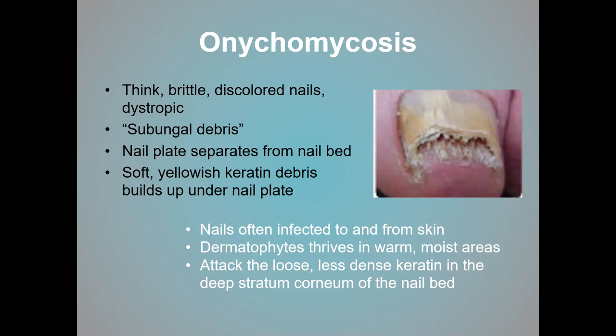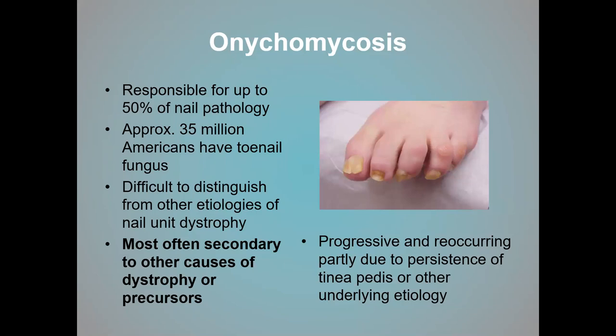Onychomycosis leaves you with thick, brittle, discolored, dystrophic nails with subungual debris, and the nail separates from the nail bed. Fungus loves warm, moist areas, which is why you see it more on toenails than fingernails — because shoes are warm, moist environments. However, not all nail pathology is fungus. Approximately 35 million Americans have nail fungus, but there is a very large percentage — up to 50% — of dystrophic nails that are not fungus. It's difficult to distinguish, but we can test for fungus and even identify the strain for a more targeted treatment protocol.